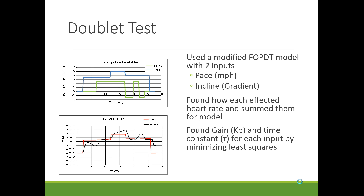The top graph shows the manipulated variables — both pace and percent grade. We used a modified first-order plus dead time (FOPDT) model with both pace and incline, finding how each affected heart rate and summing them to get a combined model. We found the gains and time constants for both pace and percent grade by minimizing the sum of squares. The bottom graph shows how our model approximates the actual heart rate of the runner on the treadmill.